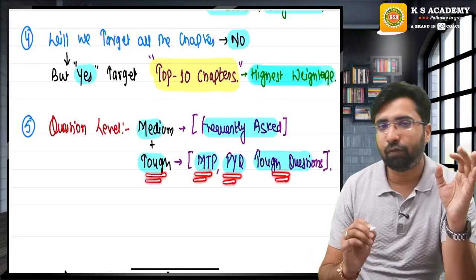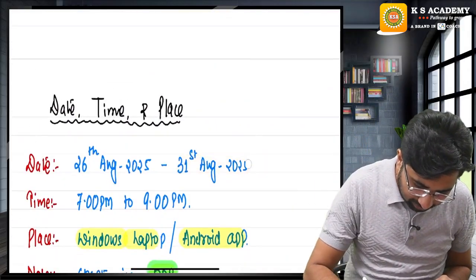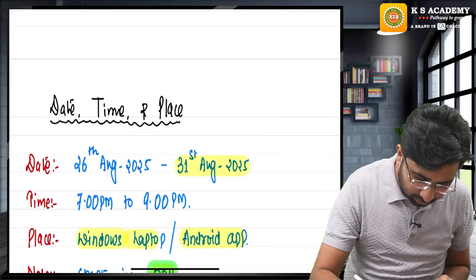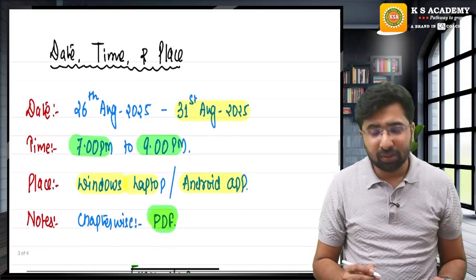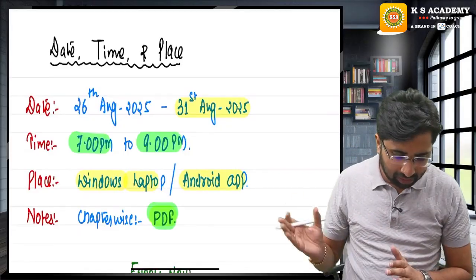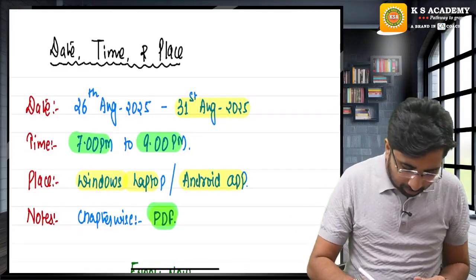What is the date, time, everything? We are starting this batch from the 26th of August. Timing will be 7 PM to 9 PM. This batch will be played exclusively on our app, that will be either on Windows laptop or Android mobile phone.